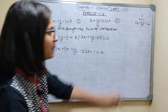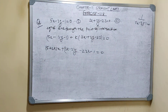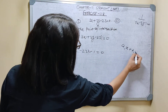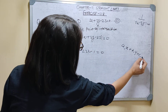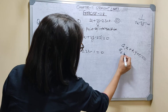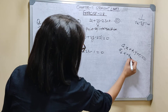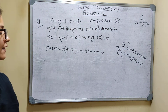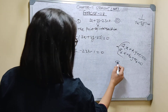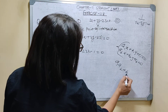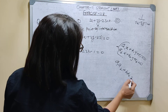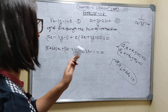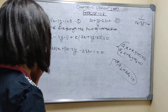Now, this line and the given line are perpendicular. Two lines are perpendicular. The condition is: for lines A1x plus B1y plus C1 equals 0 and A2x plus B2y plus C2 equals 0, if they are perpendicular then A1·A2 plus B1·B2 equals 0.